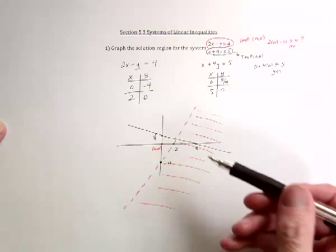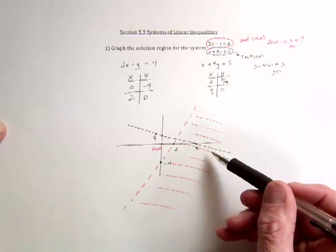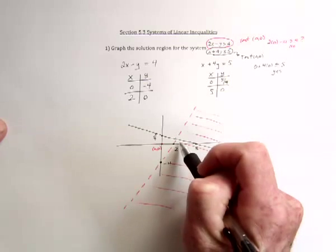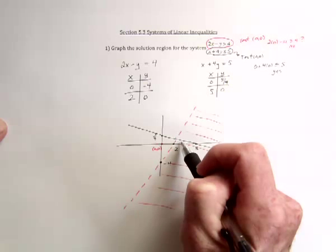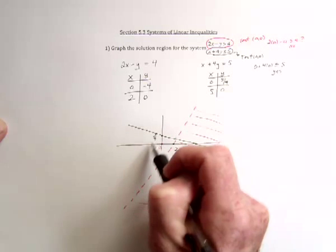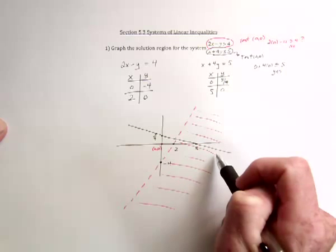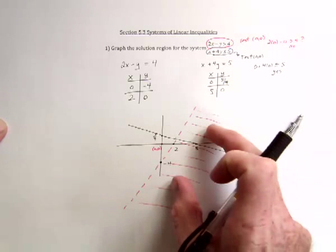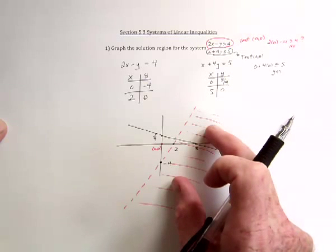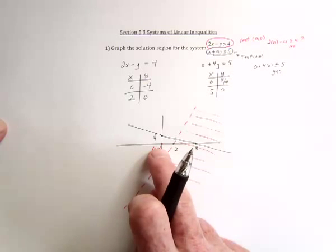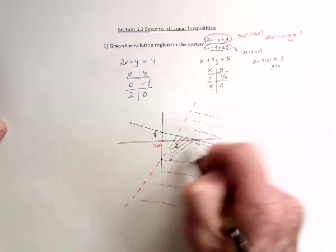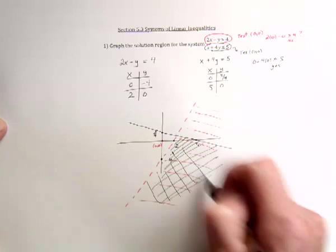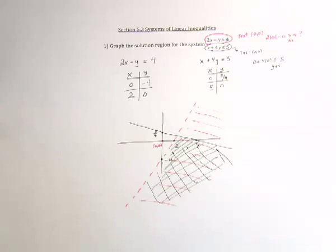So that means that for the solid line, the black line here, 0, 0 made it true. So everything below this is going to make it true. So that means below the black line. Now technically it would be over here as well. But I know from the red one that it has to be in this region over here. So it has to be on the right side of the red dotted line. And according to this last one, it has to be below the black line. So that's going to be this region all in here where the two overlap. And there's the solution.